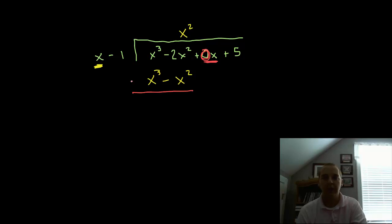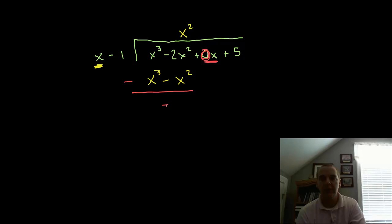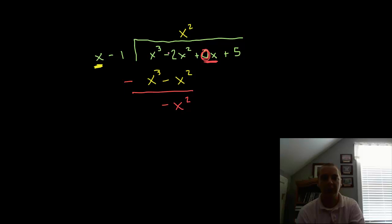Next we subtract. We have two columns to subtract. x cubed minus x cubed cancels. Then be very careful with your signs: negative 2x squared minus negative x squared — when you have minus a negative it makes a plus — gives us negative x squared. Don't put negative 3x squared; you're subtracting, not adding. Then bring down your placeholder — 0x — to continue.